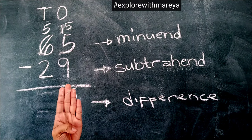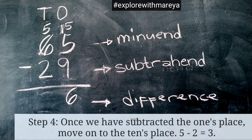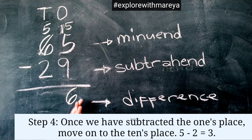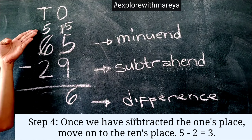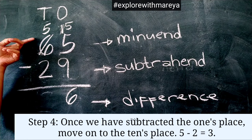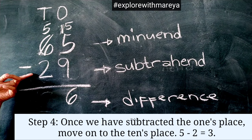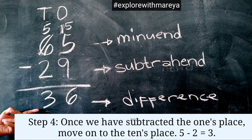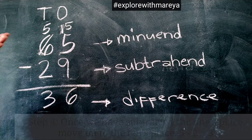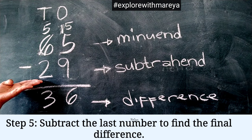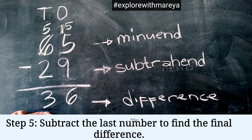Step 4: Once we have subtracted the 1's place, move to the 10's place. 5 minus 2 equals 3. The difference between 65 and 29 is 36.